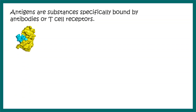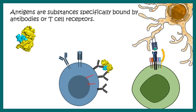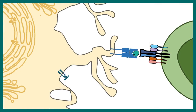Antigens are substances which can bind specifically to T cell receptors or B cell receptors, that means antibodies. Here, an antigen presenting cell — which is a dendritic cell or a macrophage — is presenting an antigen derived from a pathogen or an external source to the T cell receptor, and this interaction is very specific.